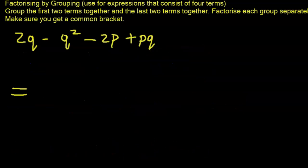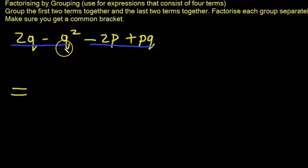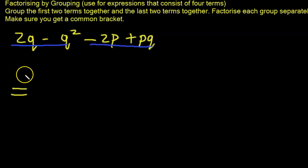Here is another four-term expression. We're going to factor by grouping again. We look at the first pair and break it into two groups. For the first pair of expressions, we examine the common factor, which is q.